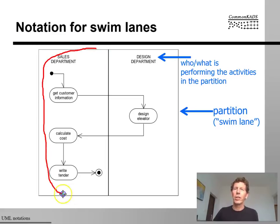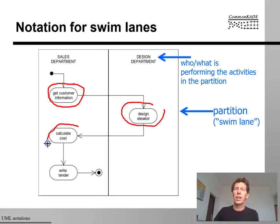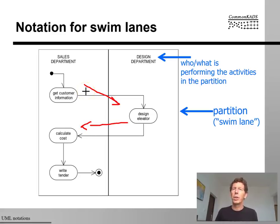So we have two swim lanes here. One is the set of activities done by the sales department. And the other one is the activity done by the design department. And the overall flow switches from activities in the sales department to activities in the design department, and then back to activities in the sales department. So in this case, the sales department gets customer information. It sends this to the design department. We have to design a product that is suitable for the customer. And then the design department sends the design back to the sales department to calculate the cost. So you see activities switching between the different actors. And this is written down as activities happening in the different swim lanes.